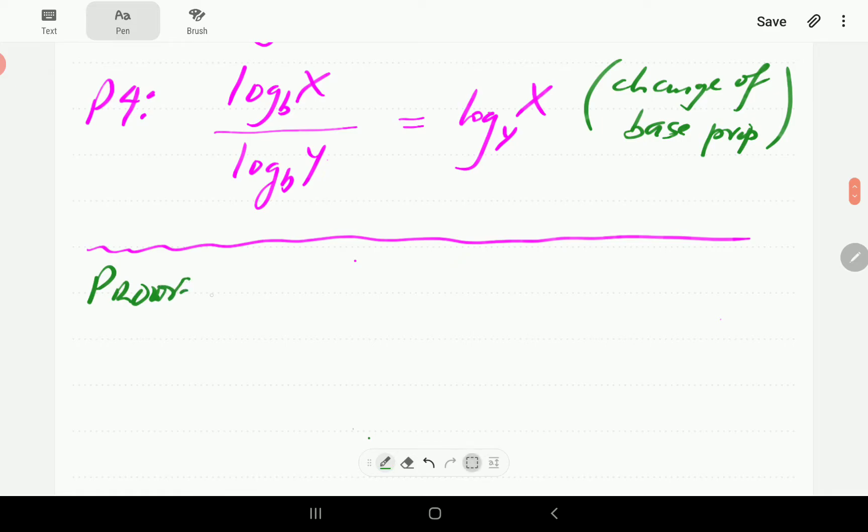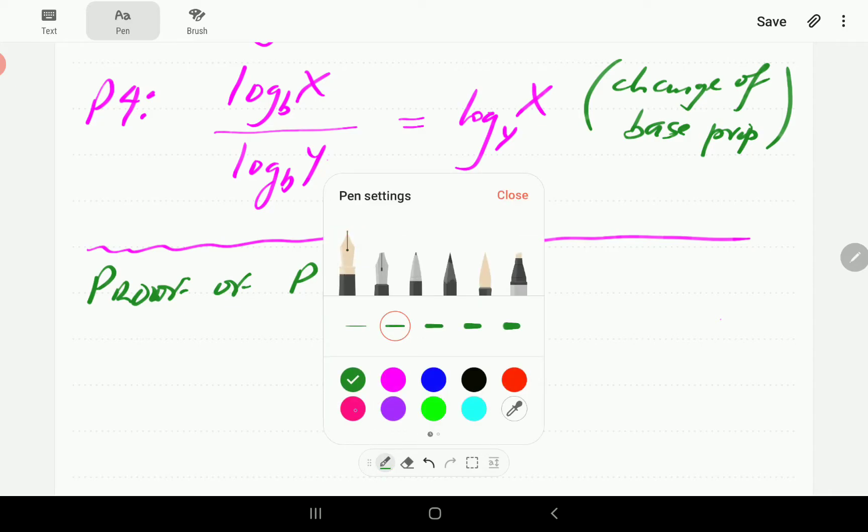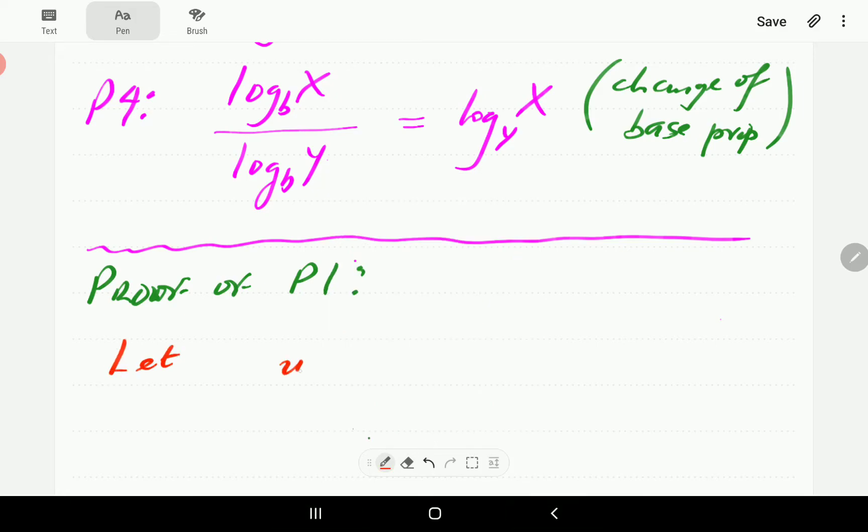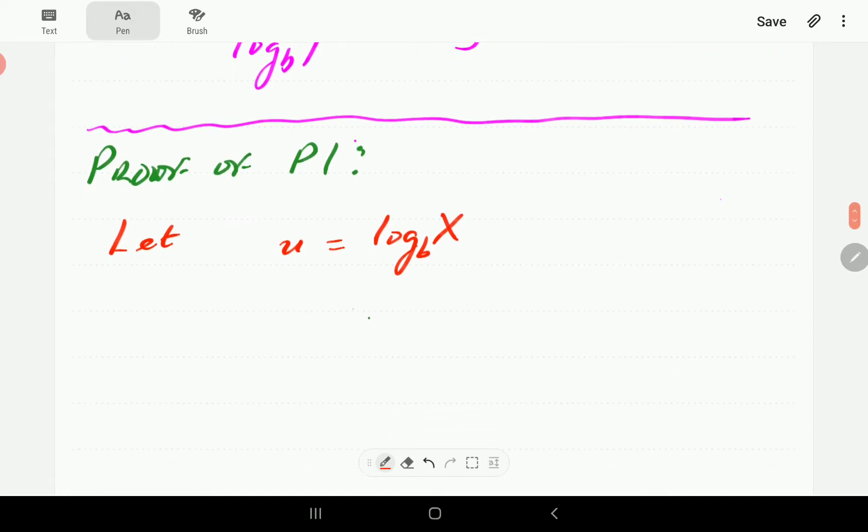Proof of the first property. To prove that first one, what we're going to do is we're going to let u be equal to the logarithm of x to base b. We're going to let v be the logarithm of y to base b. Then if we write in exponential form, it says b to the power u must be equal to x. This one is saying b to the power v must be equal to y.